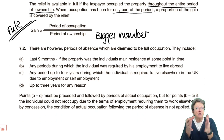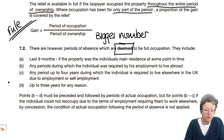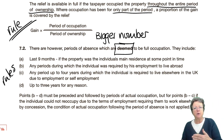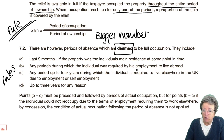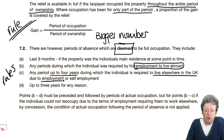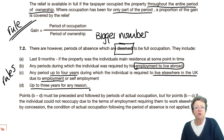Now there are some periods when you were actually there. However, the revenue have come up with what's known as deemed periods of occupation. The last nine months is always deemed as a period of occupation. Any periods when an individual is required to live and work abroad. Any period up to four years during which the individual is required to live elsewhere in the UK because of their job, and up to three years for any reason. Now B and D must be preceded and followed by periods of actual occupation.